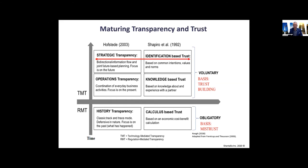Maturing transparency and trust together: history-based transparency on the left, operations and strategic on the right. From Shapiro's model, identification-based trust maps to strategic transparency, knowledge-based trust maps to operational transparency, and calculus-based trust maps to history-based transparency. B2B contracts and regulation sit in calculus-based trust — risk-based management normally based on mistrust. Distrust is different again — it's based on suspicion. The key finding from my own research is that voluntary methods of trust building are more effective in building strong supply chain relationships.